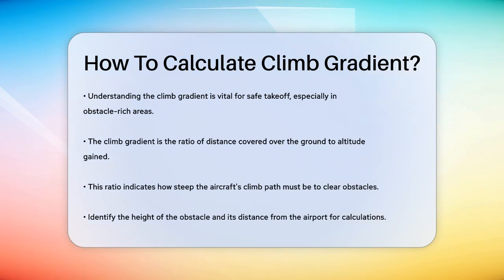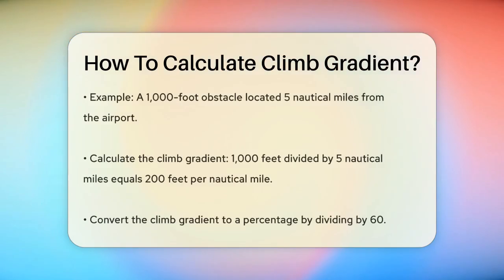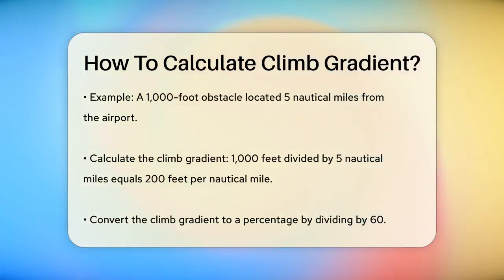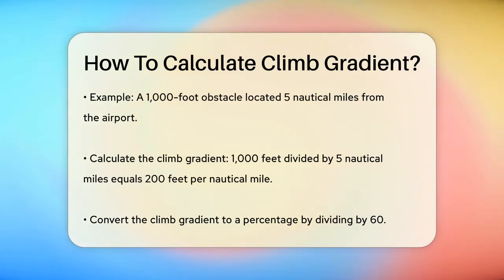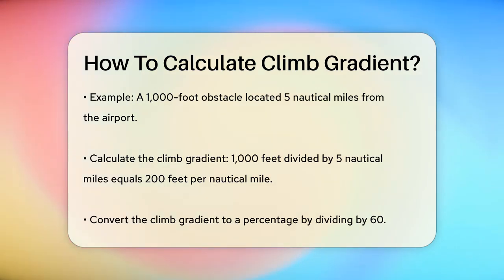To calculate the climb gradient, you start by identifying the height of the obstacle you need to clear and its distance from the airport. For example, if you have a 1,000-foot obstacle 5 nautical miles from the airport, you divide the obstacle height by the distance. So, 1,000 feet divided by 5 nautical miles gives you 200 feet per nautical mile.